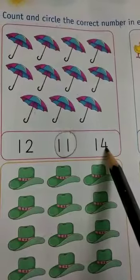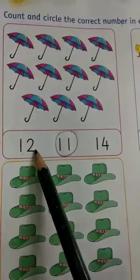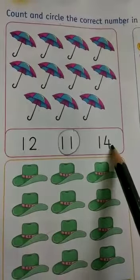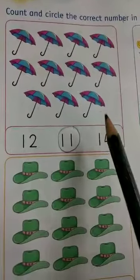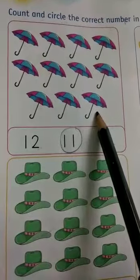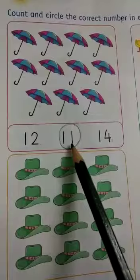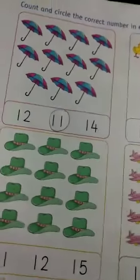Next number is 1, 4, 14. So, 1, 2, 12 and 1, 4, 14 number is not. Because there are 11 umbrellas. This is why we circle the number 11.